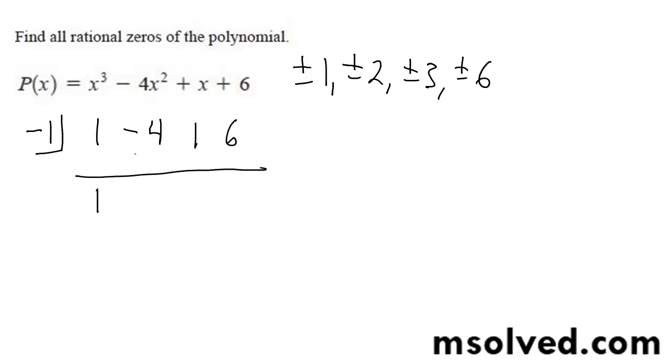So I'm going to get 1 times negative 1, negative 1, I get negative 5, gives me 5, gives me 6. 6 times negative 1 is negative 6, gives me 0.